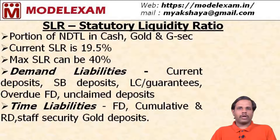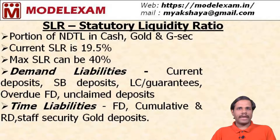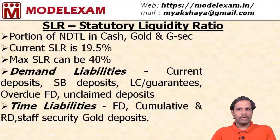Demand liabilities include current deposits, savings bank deposits, letters of credit or guarantees, overdue fixed deposits, and unclaimed deposits.